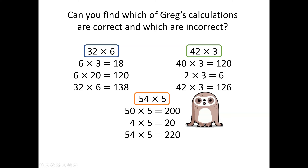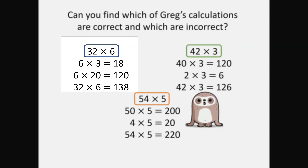Let's find out how you got on. In our first example, Greg was trying to calculate thirty-two multiplied by six, but he has multiplied six by three and six by twenty, which would mean that Greg has calculated twenty-three multiplied by six. Sorry Greg, but this was incorrect.